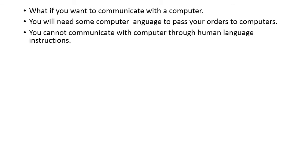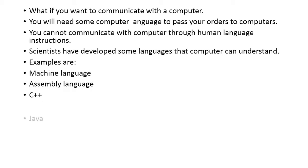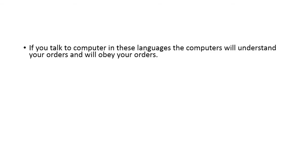However, you cannot communicate with computers through human language instructions. You will need some sort of language, and scientists have developed languages that computers can understand. For example, machine language, assembly language, C++, Java, Python, R programming, Ring, etc. These are examples of computer languages through which you can communicate with your computer, pass your orders, and the computer will understand and carry out the functions you have ordered.